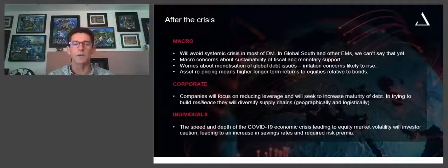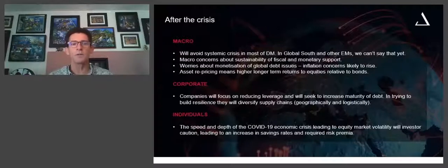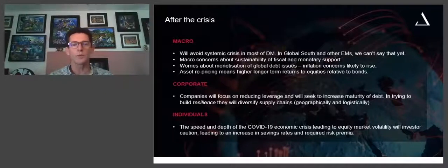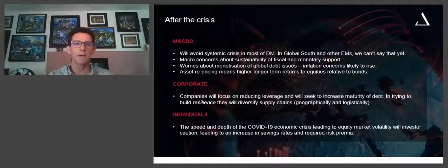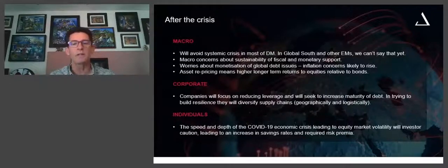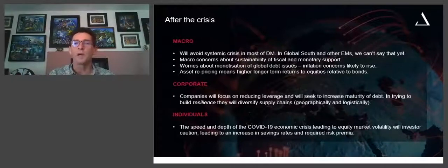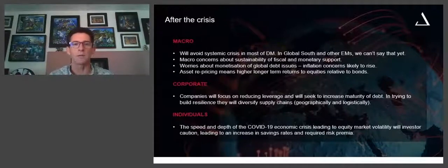On an overall basis, from a macro perspective, the asset pricing we've seen in the equity space versus the repricing we've seen in the bond space points to the fact that if you have a long investment horizon — probably three to five years from this point — it certainly points to better returns out of the equity market relative to fixed income. If you're a South African investor looking offshore and wanting a fixed income or income component, local bonds offer you better value than offshore bonds.